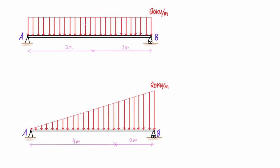For the first one, a rectangular or constant distributed load, it's pretty easy. We have 20 kilonewtons per meter acting over 6 meters, so the whole load that this distributed load is applying is 20 times 6, which is 120 kilonewtons.